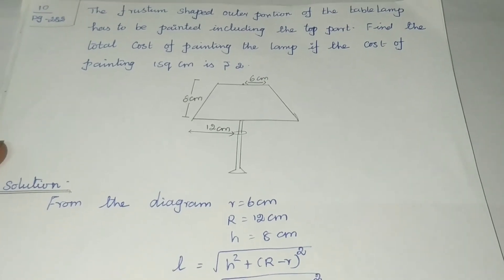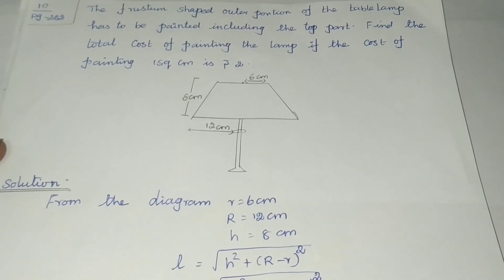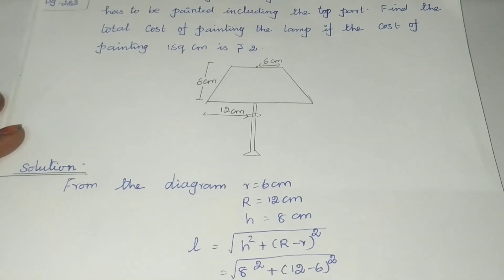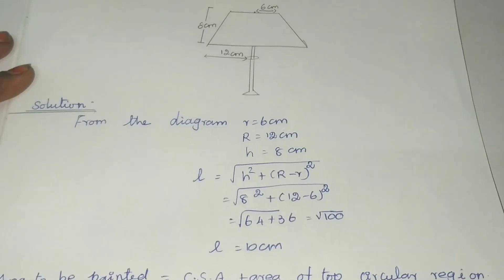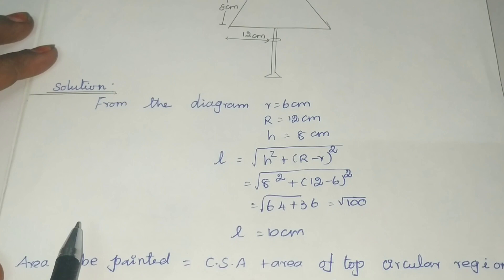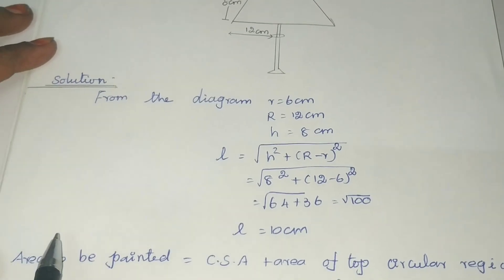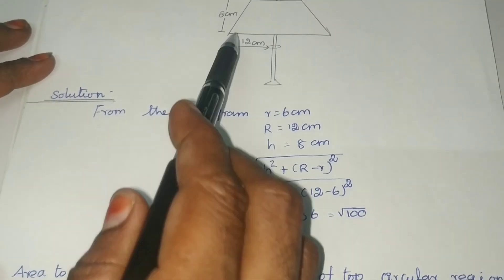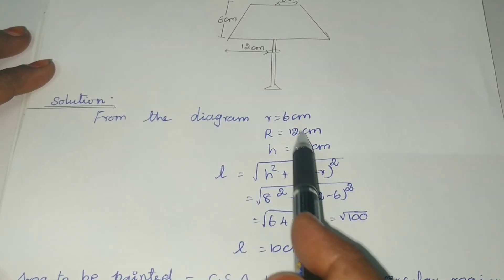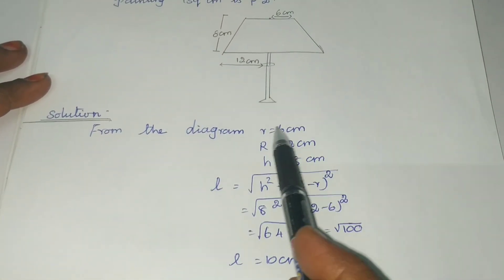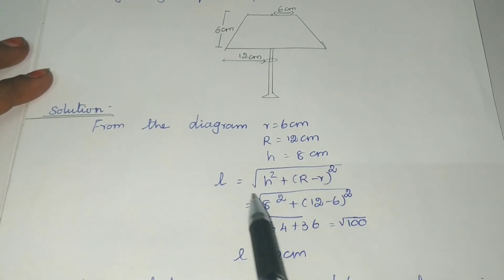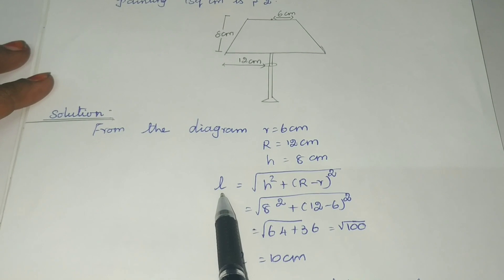From the diagram, capital R (bottom radius) equals 12 centimeter, the top radius (small r) equals 6 centimeter, and height equals 8 centimeter.